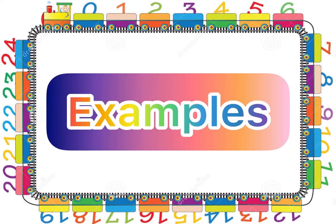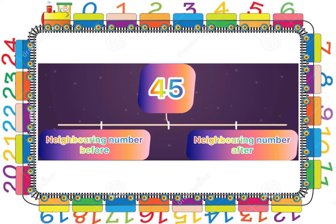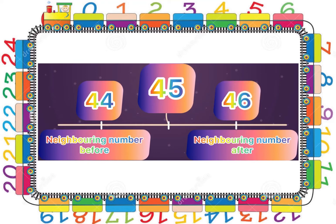Now children, let us solve a few more examples of neighbouring numbers — you'll have to tell me the number which comes before and after the given number. Can you all tell me which are the neighbouring numbers before and after number 45? You all are right — the neighbouring number before 45 is 44 and the neighbouring number after 45 is 46.